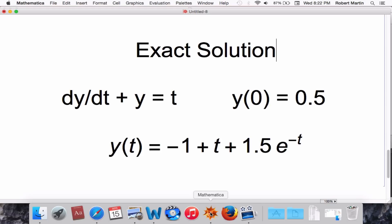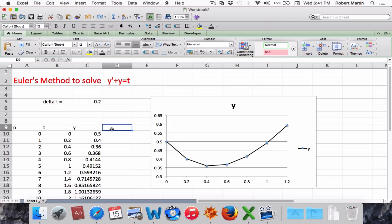The exact solution for the differential equation is y(t) = -1 + t + 1.5e^(-t). Let's plot this solution in Excel.